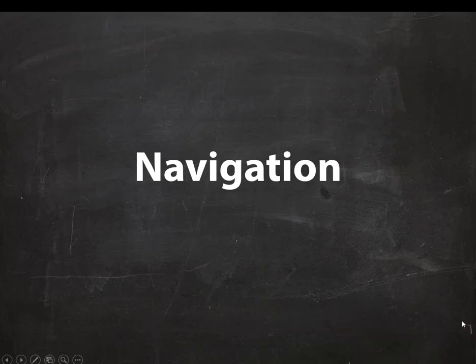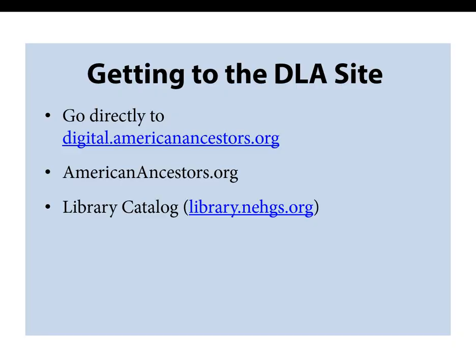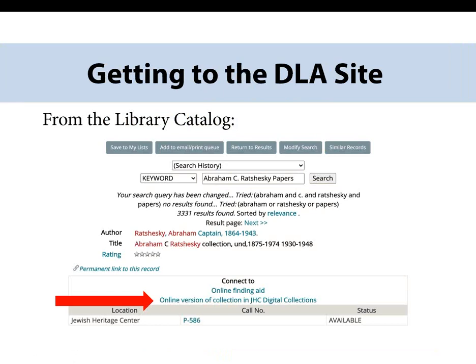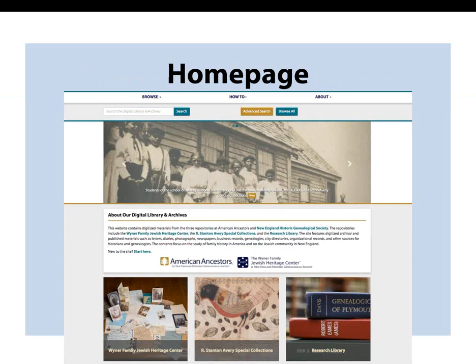Now that you know a bit more about what you can find at the Digital Library and Archives, I'll go into some detail about how to use it. To get to the DLA website, you have several options. The most direct way is to go right to the URL, digital.americanancestors.org. You can also follow the links on americanancestors.org — go to the menu bar, and under Search there's a link to Digital Book and Manuscript Collections, and under Library there's a similar link. Both of these links go directly to the DLA homepage. Lastly, you can access the site from the library catalog — whenever a digitized version is available in the DLA, there's a link in the library catalog record just above the call number, which will take you directly to the digitized version of that material.